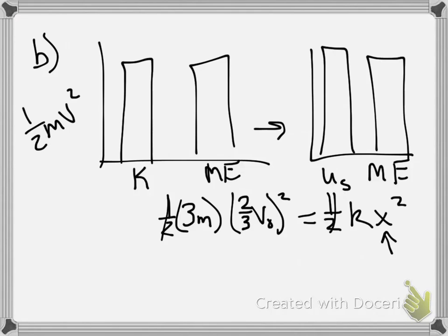This 1 half cancels out with that 1 half. We have a squared here. So, we have 3M multiplied by 4 over 9 V0 squared equals K X squared. Okay, so this 3 makes that 9 a 3. So, what are we left with? We're probably going to have to divide by K, right? Divide by K.